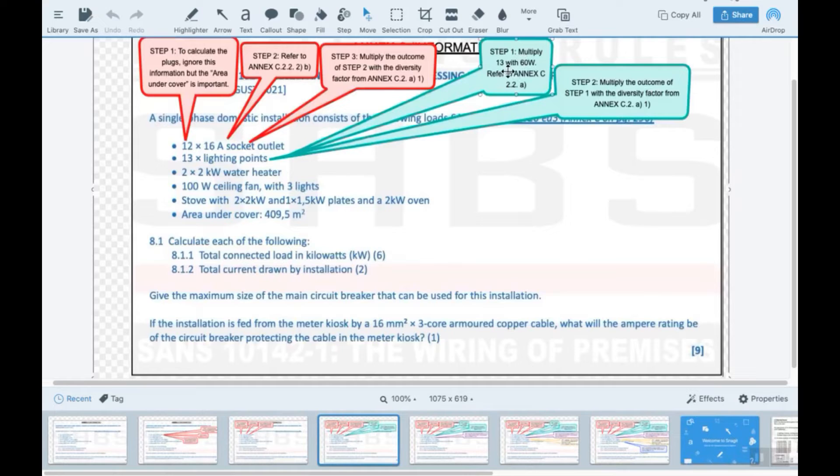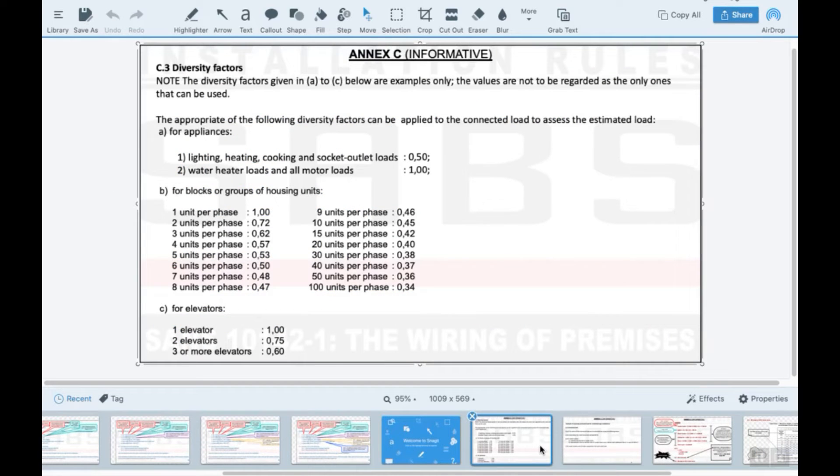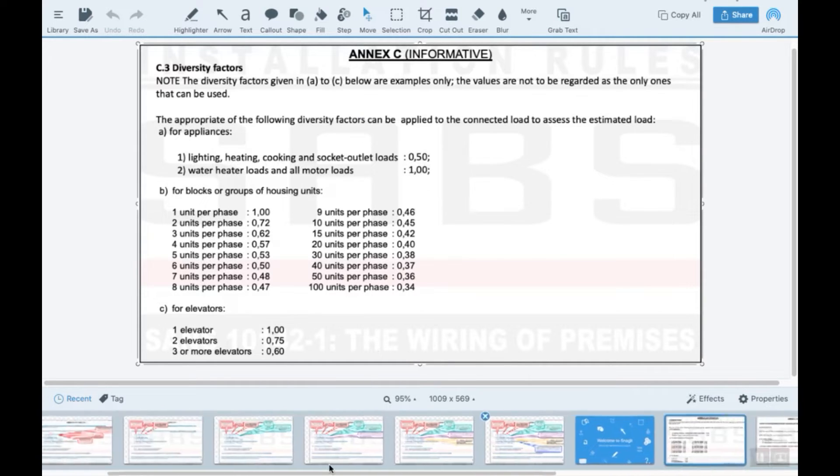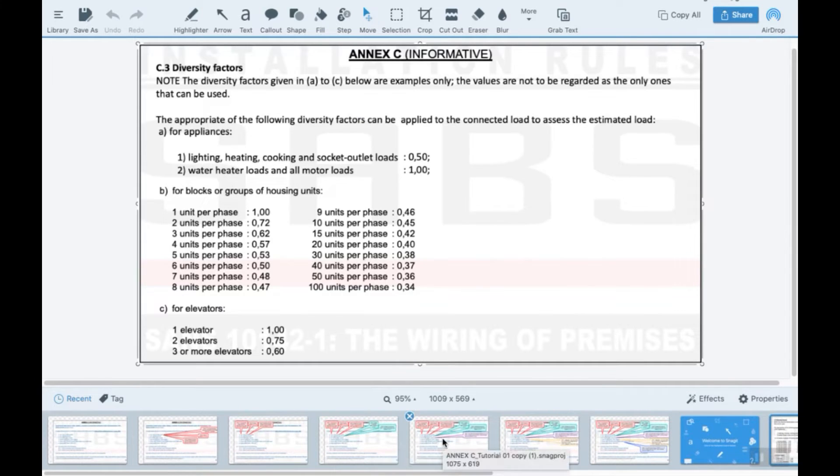So the notes show here step one: multiply 13 with 60, refer to the annex. Step two: multiply the outcome. After you've taken that times 13 times 60, then you will multiply it with the diversity factor, also found with diversity factors from SANS over here. Lighting and socket outlets both have got the same diversity factor.